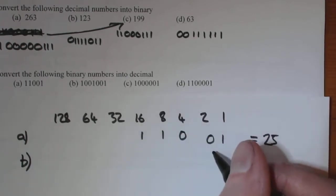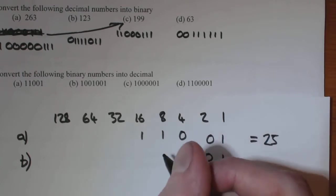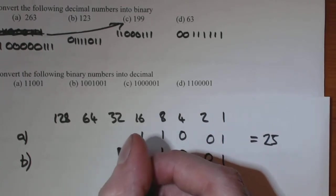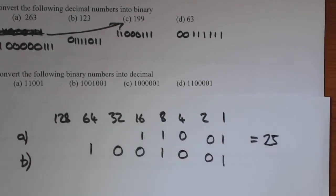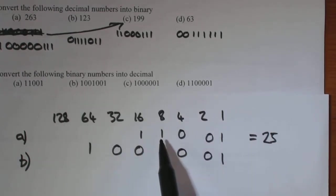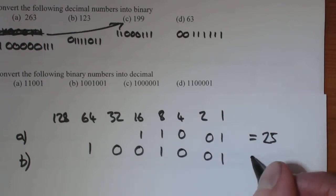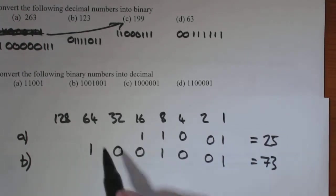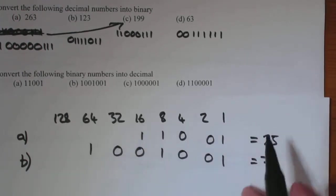For B, we have 1001001. So we've got 64 plus 8, which is 72, and that equals 73. So 64 plus 72, that's plus 1.